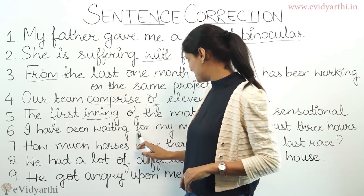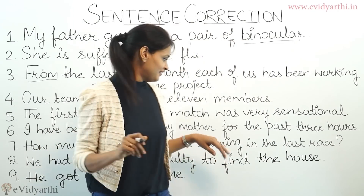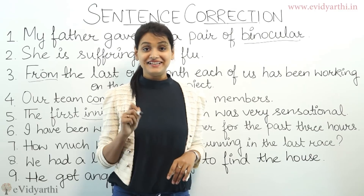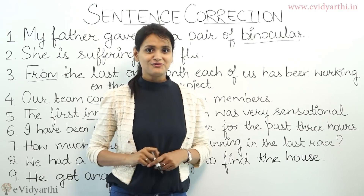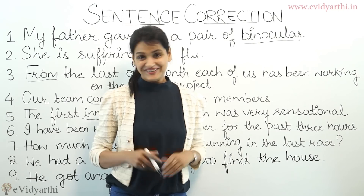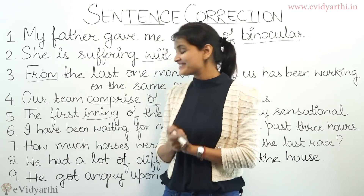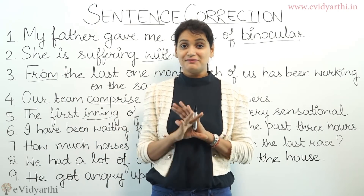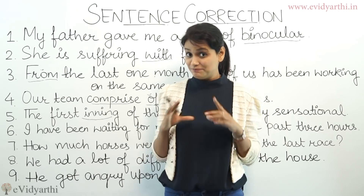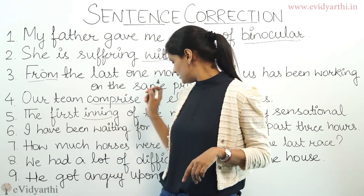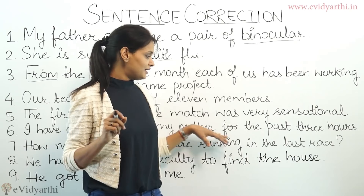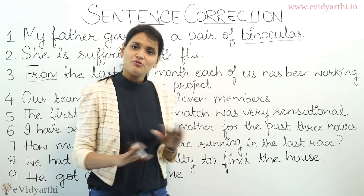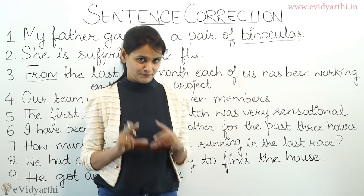Next is: I have been waiting for my mother for the past three hours. Now you tell me what is exactly incorrect in this sentence. Are you able to find out? There is no mistake in this sentence. As I already explained, we use 'for' when the time is not sure — a period of time. Which three hours is not mentioned here, so there is no mistake. It's purely correct.